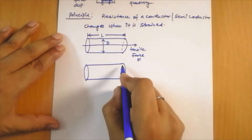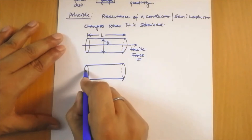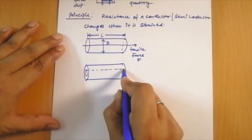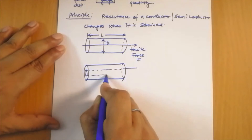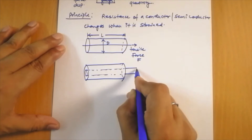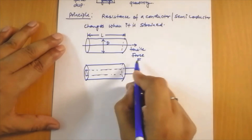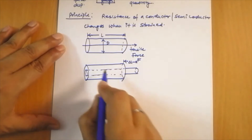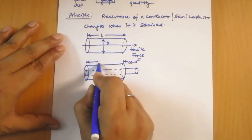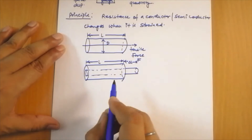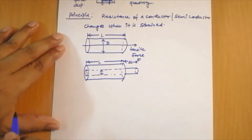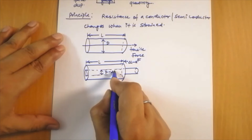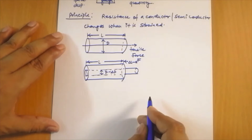Due to this tensile force, the length of this wire will increase. Suppose the length increases by delta L, so the new length is L plus delta L. The diameter decreases by delta D, so the new diameter is D minus delta D.